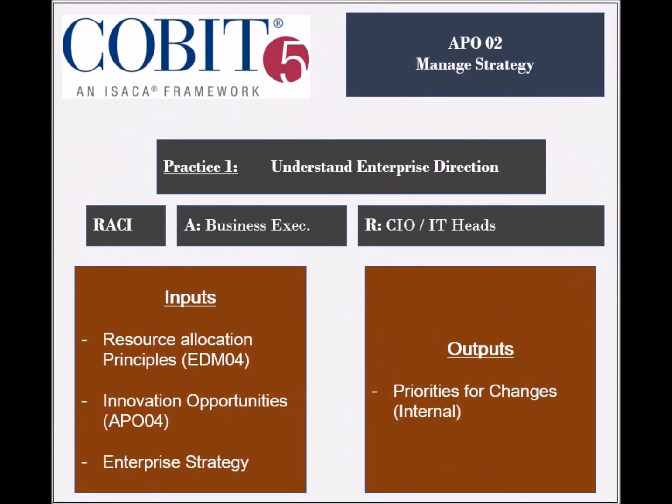This process has six practices. The first practice is to understand the enterprise direction. From a RACI chart perspective, the entities that are responsible for this practice are the Chief Information Officer and the main IT heads and managers. The entities that are held accountable are the business executives.